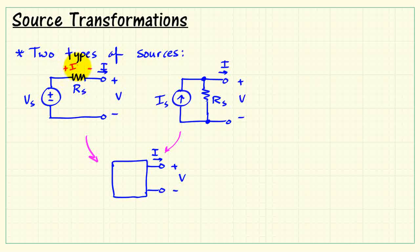Current passing through R sub S would develop a voltage drop of I times R S. And current flowing through R sub S will be the voltage drop that appears across it divided by R S. Now if we apply KVL on the circuit on the left, we have V equals V S minus I times R S.